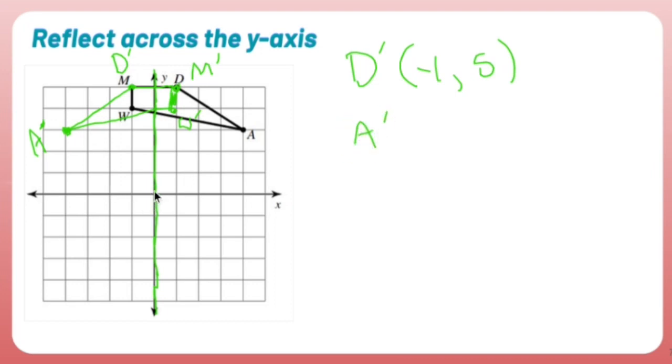A prime has me starting from the origin and going left one, two, three, four and up one, two, three. So left four, up three, that's A prime.